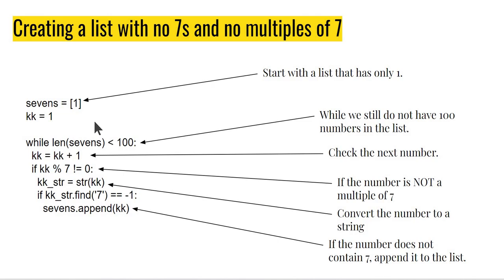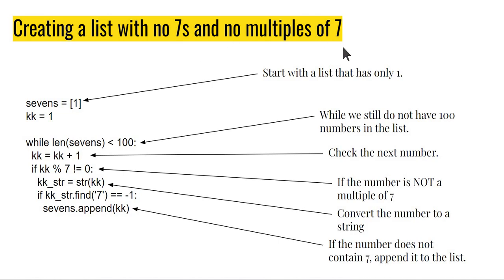Our computer wants to pick numbers from this list. What we will do is create a list which has no 7s and also no multiples of 7. Now 7 is just a number — you can change this to have no 3s, no multiples of 3, no 8s, no multiples of 8, and so on. Let's see how we do this.